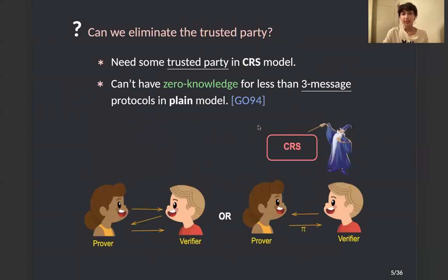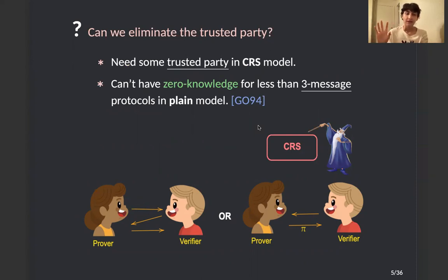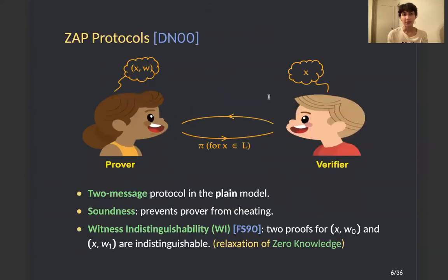The question is: can we eliminate the trusted party? In the CRS model, NIZKs need the trusted party to generate the CRS. If we eliminate the trusted party and hence the CRS, we face an impossibility result saying we cannot have the zero-knowledge property for protocols with fewer than three messages in the plain model. To get around that and eliminate the trusted party, we need to relax one of the properties of zero-knowledge protocols — the common choice is to relax the zero-knowledge property. This leads us to the definition of ZAP protocols.